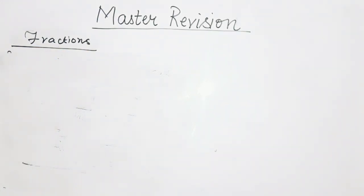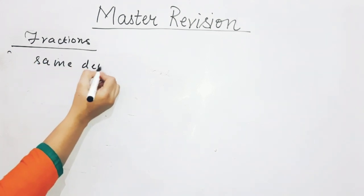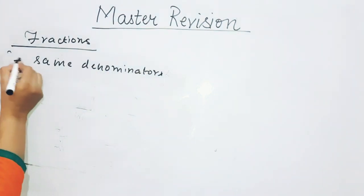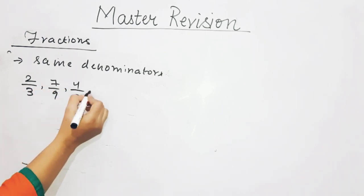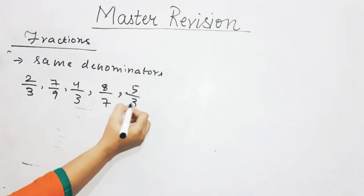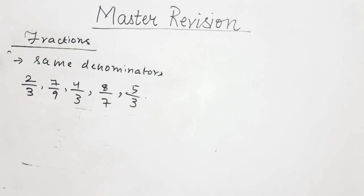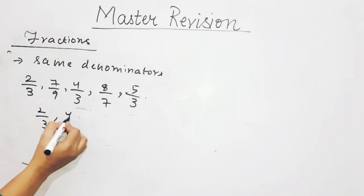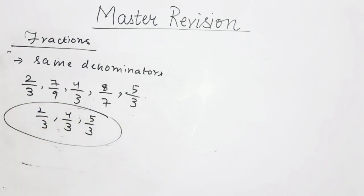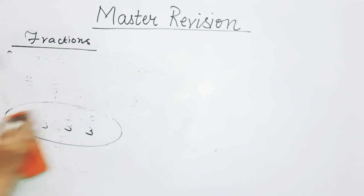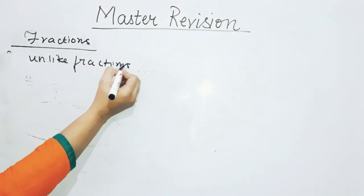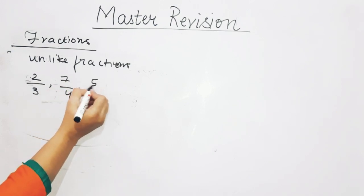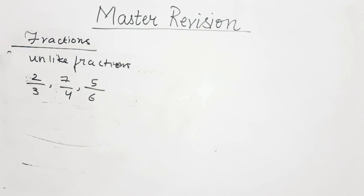Like fractions are fractions having the same denominator. For example, from: 2 upon 3, 7 upon 9, 4 upon 3, 8 upon 7, 5 upon 3 — the like fractions are 2 upon 3, 4 upon 3, and 5 upon 3. Unlike fractions are fractions having different denominators.